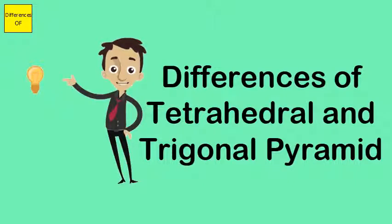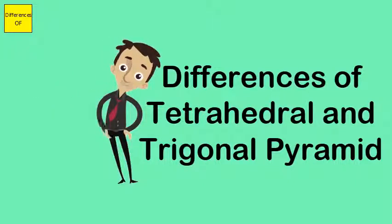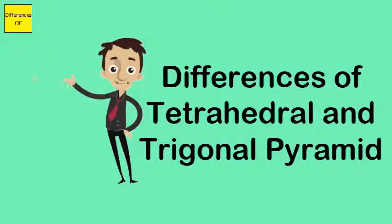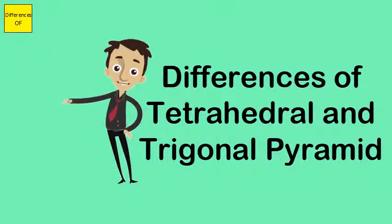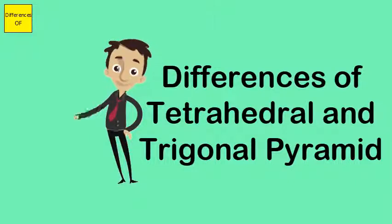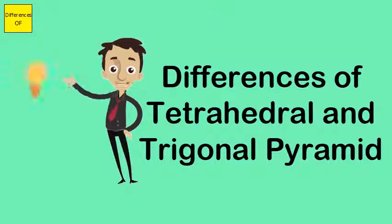Tetrahedral molecules are non-polar because the similarities of the four atoms located at the corners of the pyramid will cancel each other out. Trigonal pyramids have polar molecules because of the lone atom within their structure.